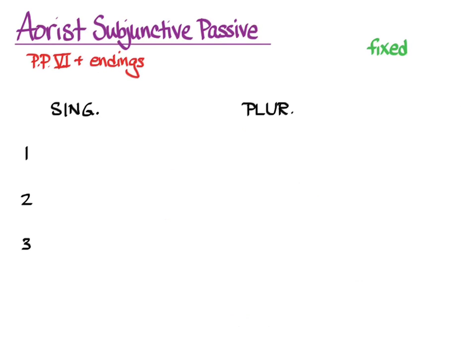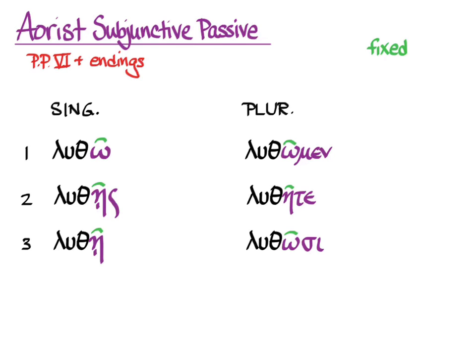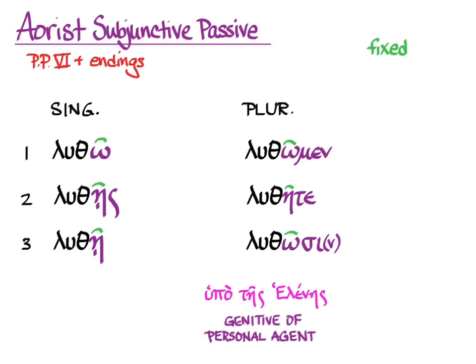Put together, the aorist subjunctive passive of luo is: lutho, luthase, luthay, luthomen, lutheta, luthosi or luthosin. If you need to be specific about the doer of the action of the passive verb, you use the genitive of the agent.